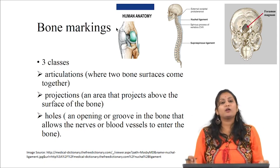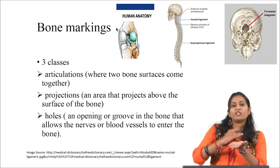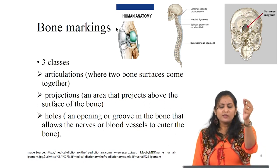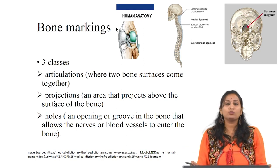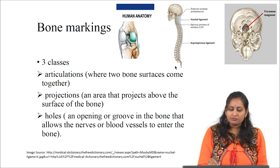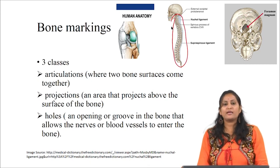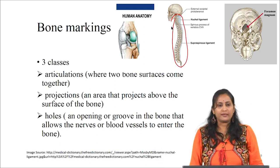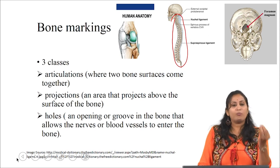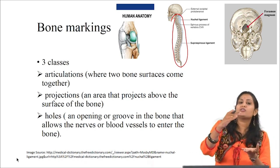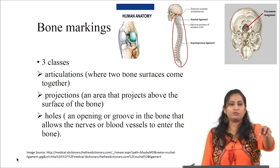The second general class is called projections — areas that project above the surface of the bone. Tendons and ligaments are attached to the periosteum through this type of marking. For example, the spinous process of a vertebra is an example of a projection bone marking. The third general class of bone marking is holes, which are openings in bone that allow nerves or blood vessels to enter. For example, the foramen where blood vessels pass through the bone.